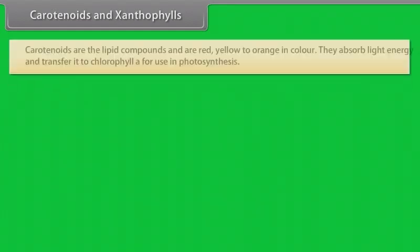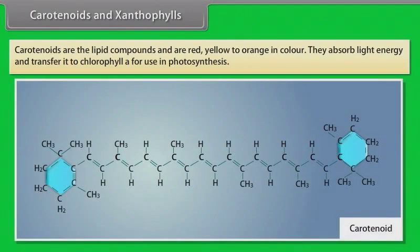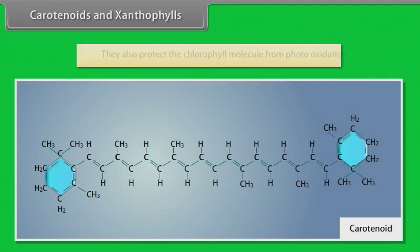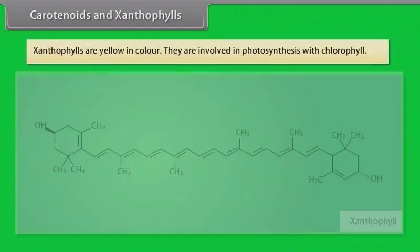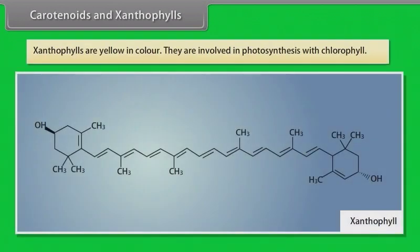Carotenoids are lipid compounds, red, yellow to orange in color. They absorb light energy and transfer it to Chlorophyll A for use in photosynthesis, and also protect the chlorophyll molecule from photo-oxidation. Xanthophylls are yellow in color and are involved in photosynthesis alongside chlorophyll.